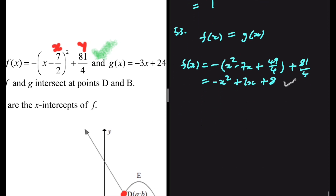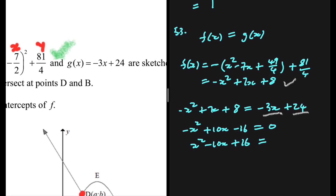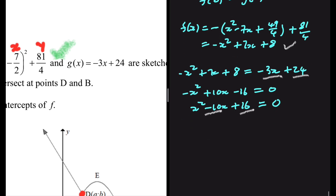Now we equate F of X and G of X: minus X squared plus 7X plus 8 equals G of X, which is minus 3X plus 24. Taking minus 3X to the left gives minus X squared plus 10X, and taking 24 to the left gives minus 16 equals 0. Multiplying by minus 1: X squared minus 10X plus 16 equals 0. Factoring with minus 8 and minus 2: X minus 8 times X minus 2 equals 0, so X equals 8 or X equals 2.